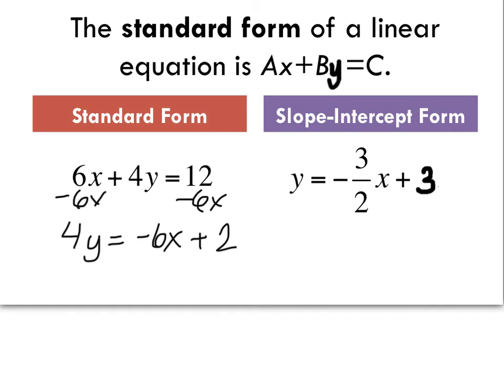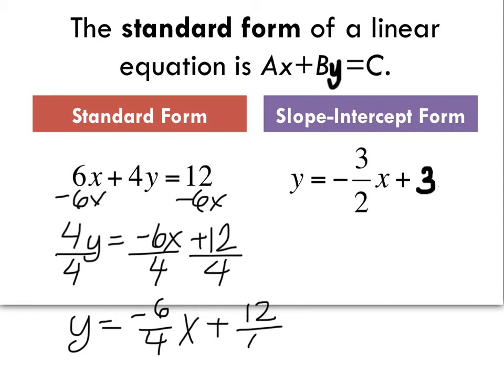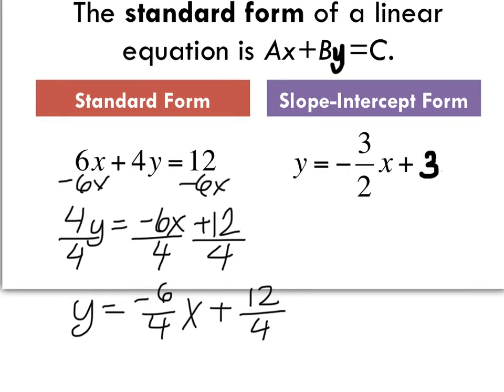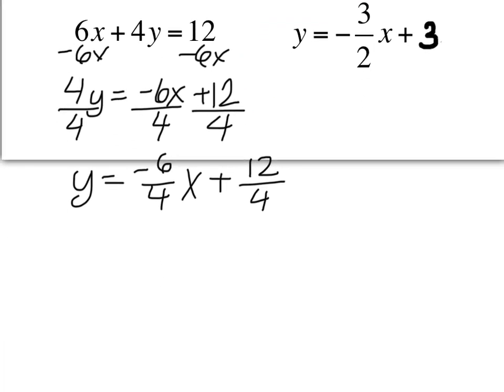If you want to get y by itself, divide everything by 4. So you get y = -6/4x + 12/4. Let's simplify that a little bit more. Y equals, we can divide top and bottom by 2, so you get -3/2x plus 12 divided by 4 is 3.